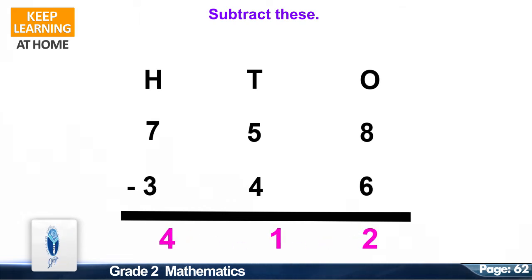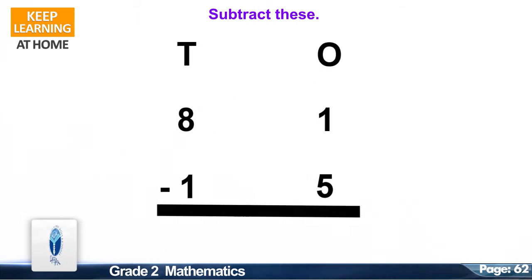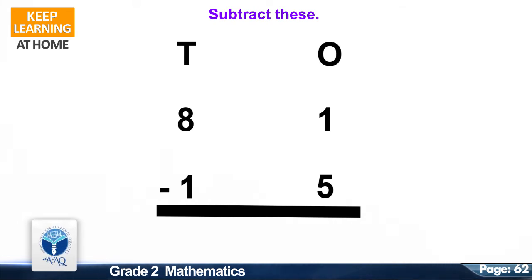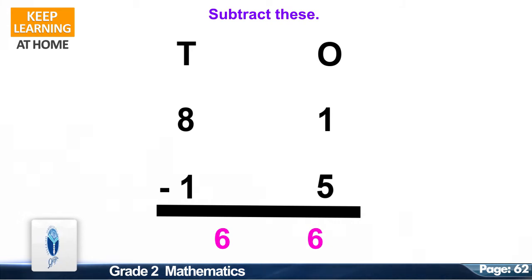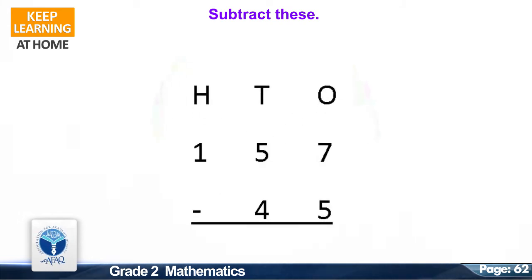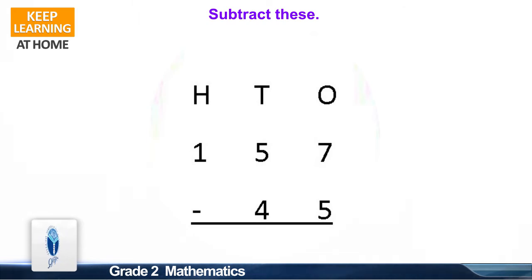Now the next question: 758 minus 346. The correct answer is 412. Now the next question: 81 minus 15. The correct answer is 66.